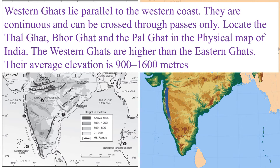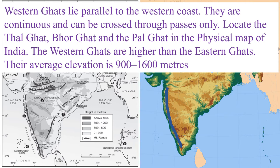The Western Ghats lie parallel to the western coast. They are continuous and can be crossed only through passes — locate the Thal Ghat, Bhor Ghat, and Pal Ghat on the physical map of India. The Western Ghats are higher than the Eastern Ghats, with an average elevation of 900 to 600 metres.